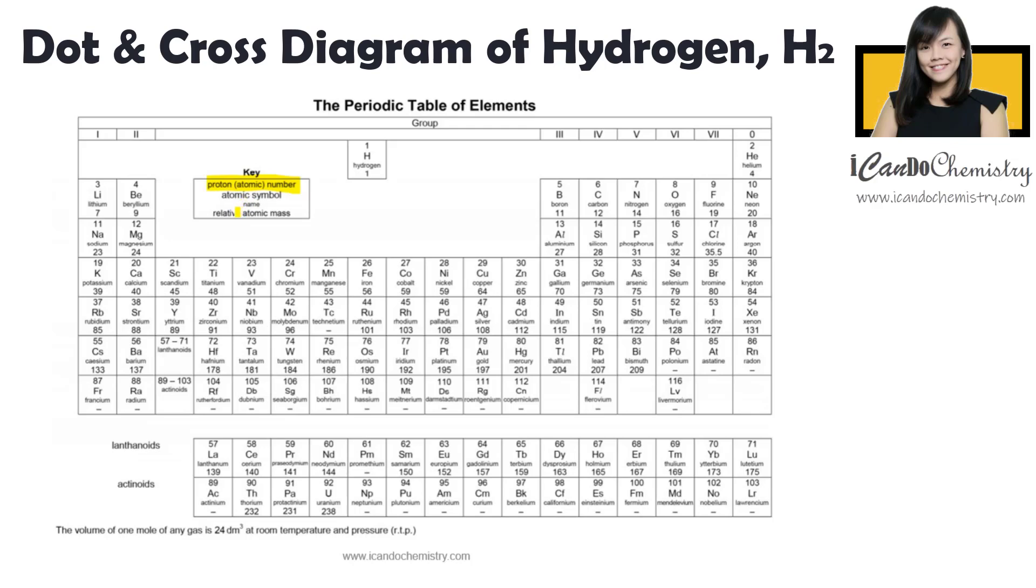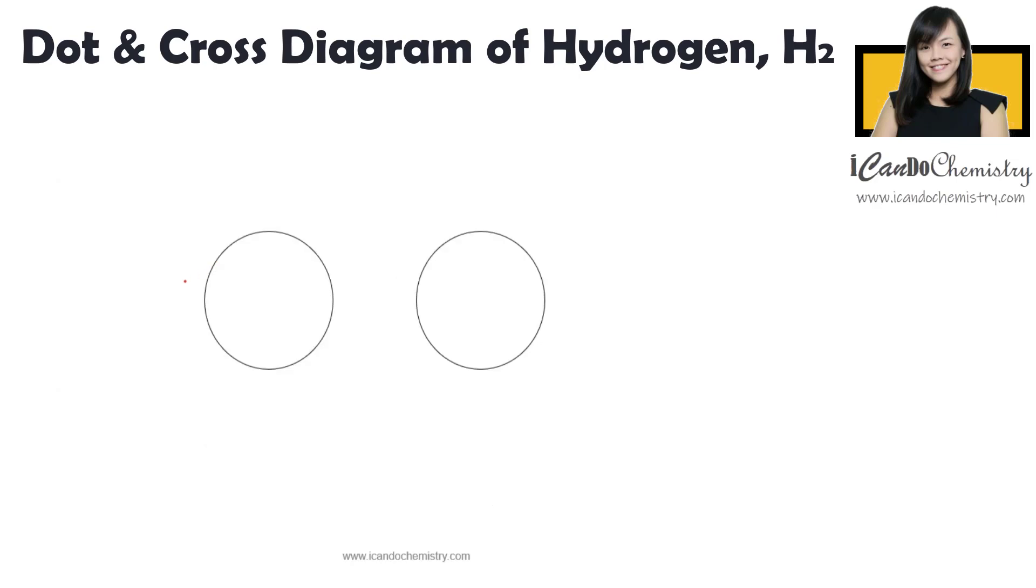Now in an atom, number of protons and number of electrons are the same. And hence we can safely say that the number at the top also represents the number of electrons in an atom. So hydrogen, the number of protons is one, and number of electrons is the same, it is also one. So each hydrogen will have one electron.